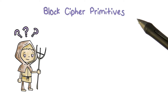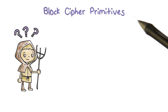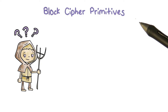The goal of encryption is to transform a plain text into an unintelligible form. Given that the attacker can obtain the ciphertext, we don't want the attacker to be able to learn about the plaintext.